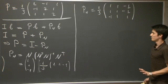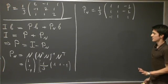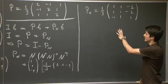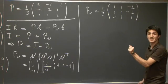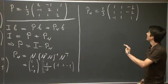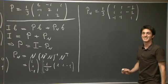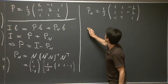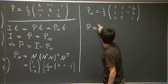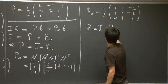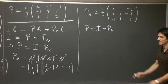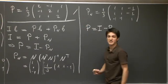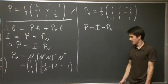In order to get the projection matrix, we just subtract this expression from the identity. And you can confirm that we get the same answer as before. All right, I think we're done here.